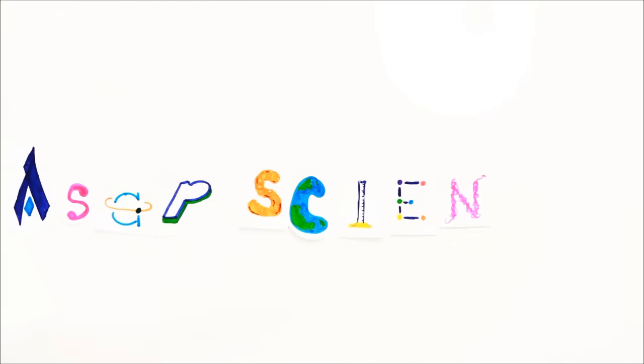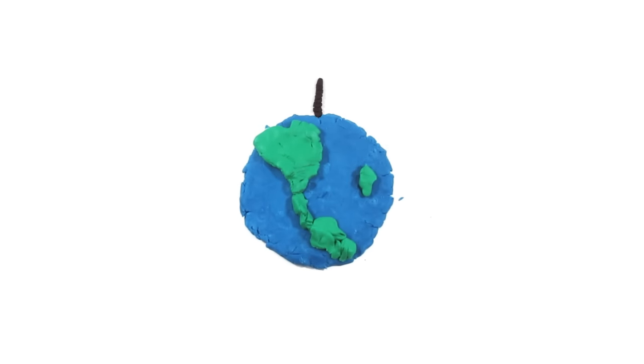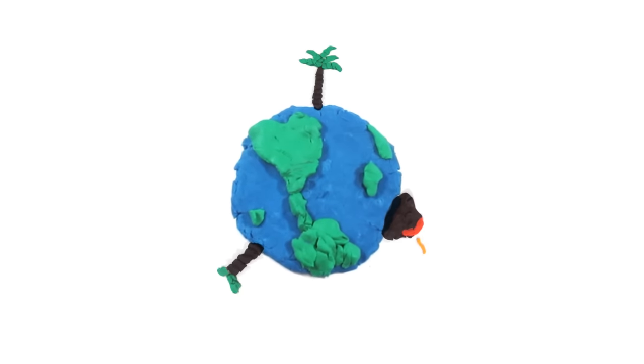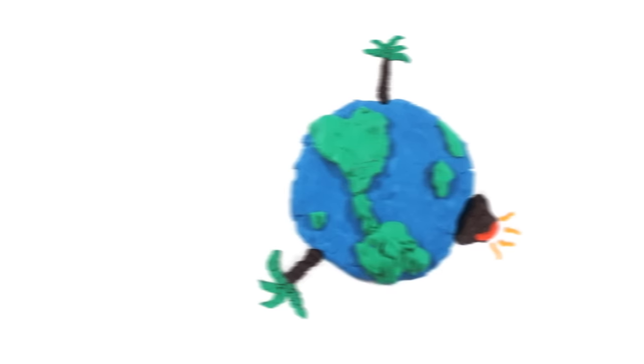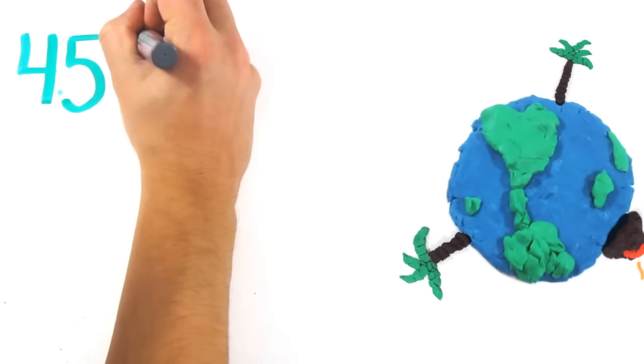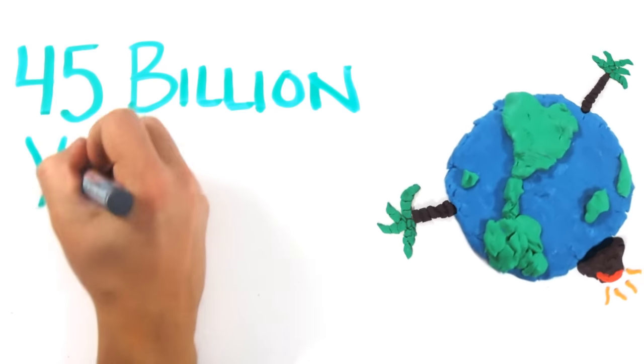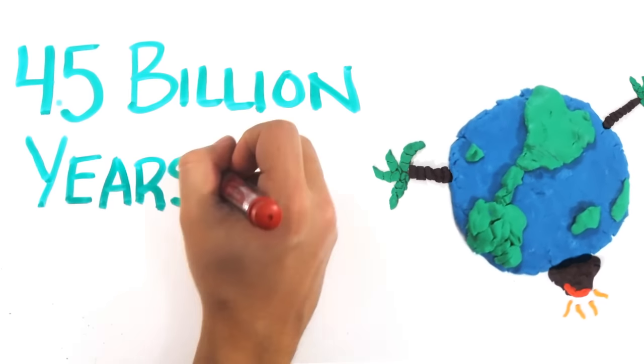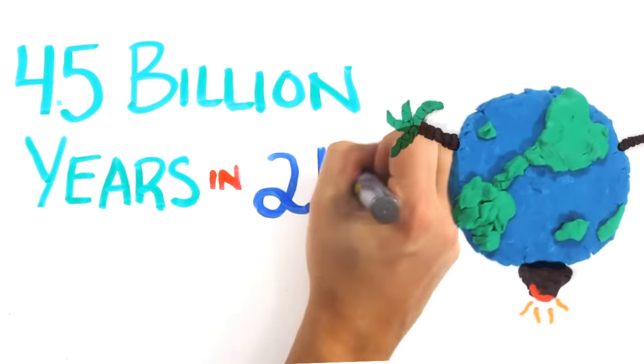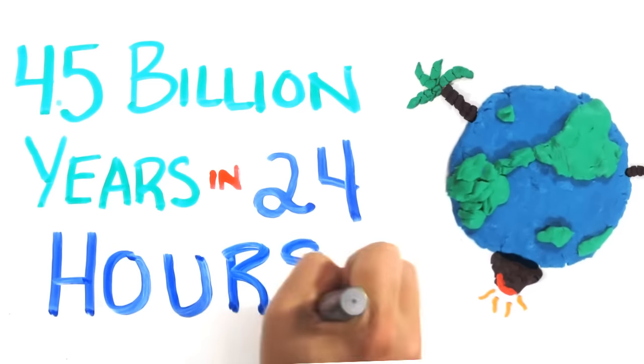Life. With an estimated 3.8 billion years of existence and evolution on Earth, it's an odd thing indeed. So how did we get here? And what would the Earth's 4.5 billion year timeline look like compressed into a normal day of 24 hours?